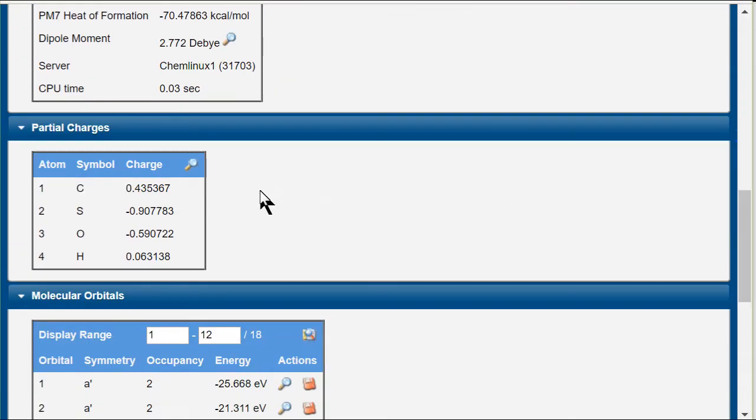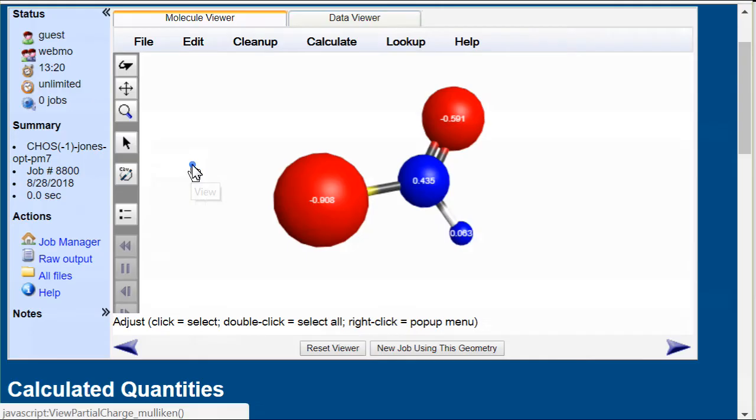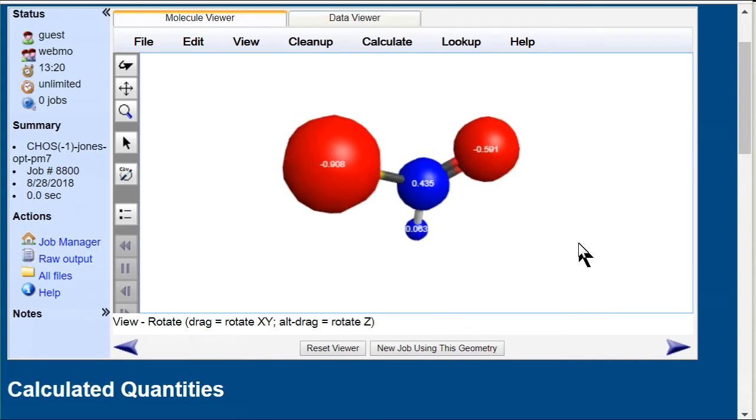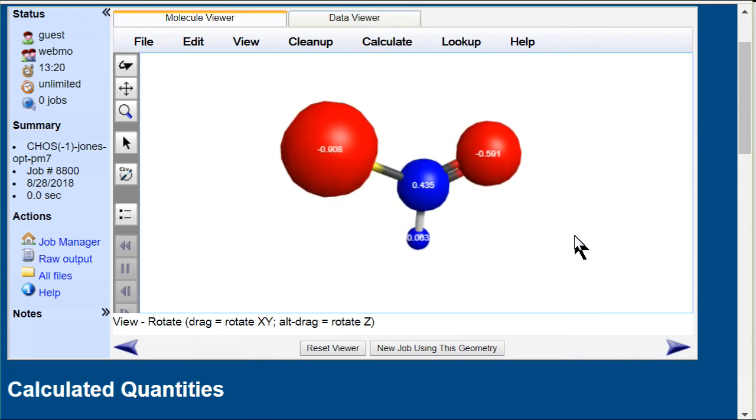Also, we can see how the minus one charge is distributed around this ion by viewing the partial charges table. Clicking the icon gives a graphical display where the red spheres are negative and blue spheres are positive. What this says is that the negative charge is actually shared between oxygen and sulfur.